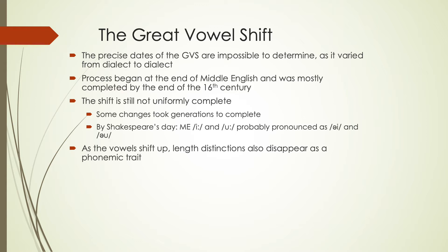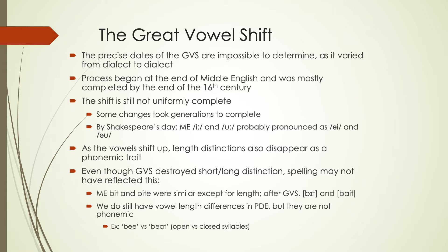There are differences in how long we pronounce vowels if we look at a waveform, but they're no longer phonemically distinct. Even though the short-long distinction is no longer there, the spelling may not have completely reflected this. So 'bit' and 'bite' would have been similar except for length — there may have been a tense or lax distinction, but similar qualities. After the Great Vowel Shift, they have completely different sounds, so we still have 'bit' and then we get 'bite.'